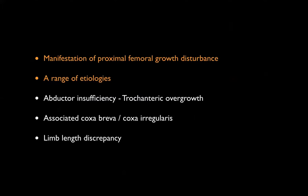My comprehensive definition: coxa vara is a manifestation of growth disturbance caused by a variety of etiologies, presenting with abductor insufficiency due to trochanteric overgrowth — which can be relative or absolute. Associated features include coxa breva, coxa irregularis, coxa plana, and in unilateral cases, limb length discrepancy. Even in bilateral cases there may be limb length discrepancy. This is what you are dealing with — not just a simplistic neck shaft angle reduction.